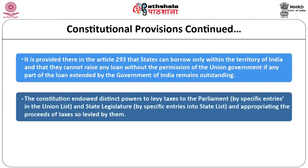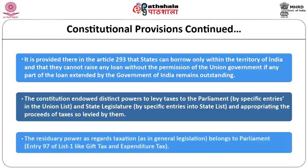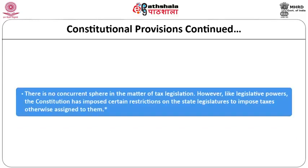The constitution grants distinct power to levy taxes: to parliament through specific entries in the union list, and to state legislatures through the state list, each appropriating the proceeds of taxes so levied. If the subject is in the union list, parliament is empowered; if in the state list, the state is empowered. Entry 97 covers residuary powers. There are no concurrent revenue sources — no concurrent taxation powers exist for both the union and states simultaneously.